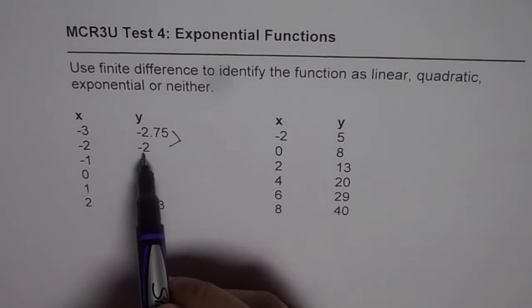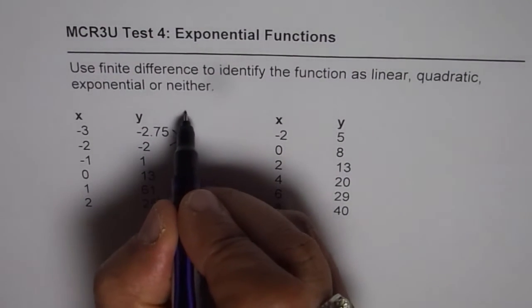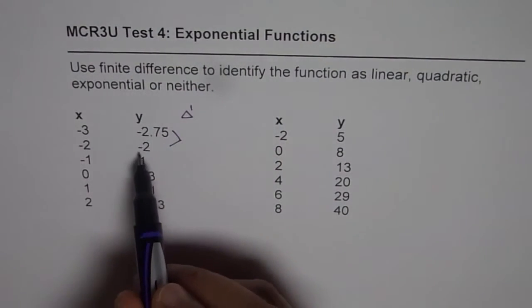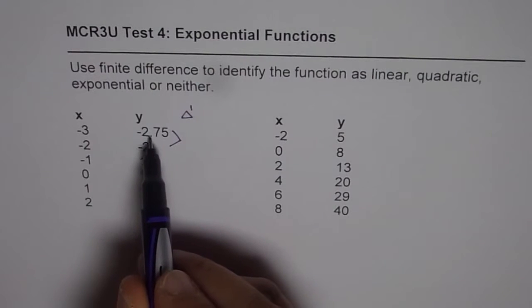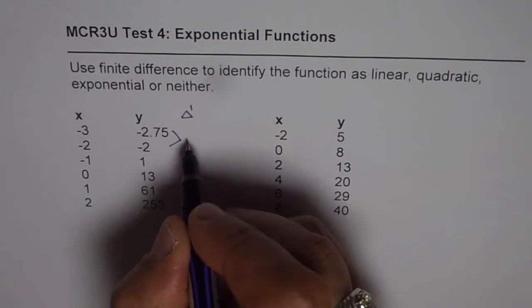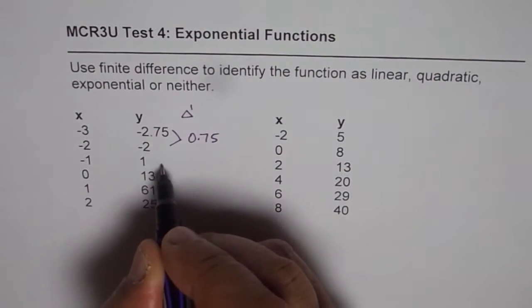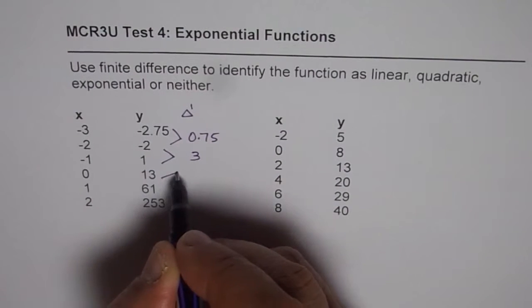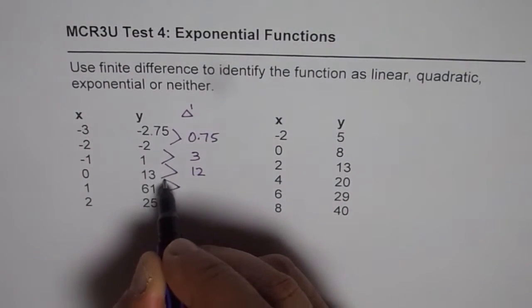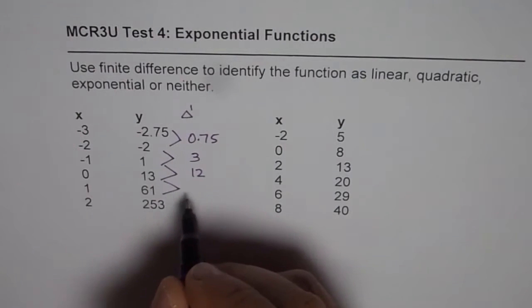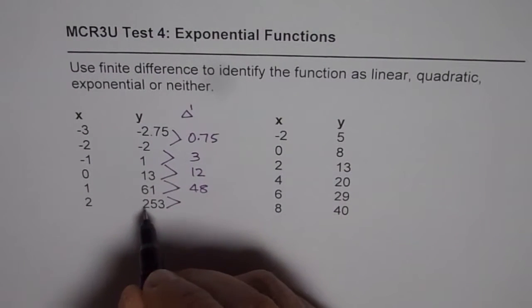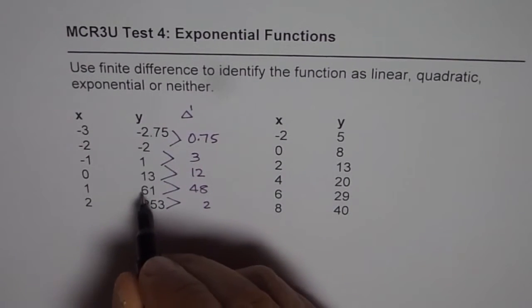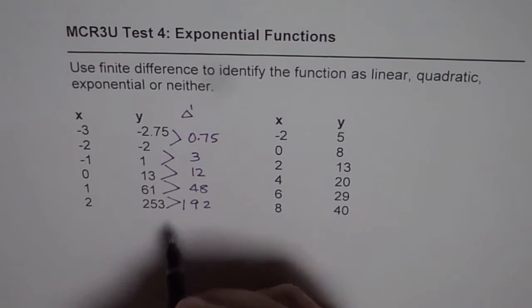Finite difference really means we have to do first finite difference, which is denoted by delta 1. So y2 minus y1. Minus 2 minus of minus 2.75. So that will give us 0.75. And then we do 1 minus minus 2. That will give us 3. 13 minus 1 gives us 12. 61 minus 13 gives us 48. 253 minus 61 gives us 192.